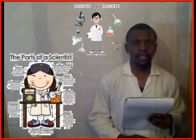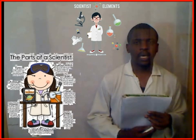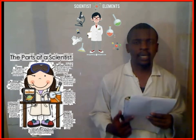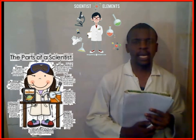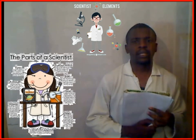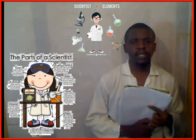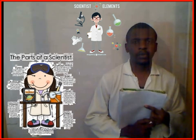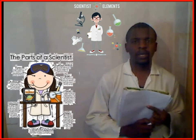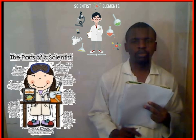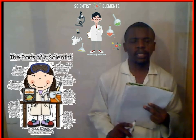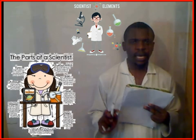A scientist is an expert in science. Someone who studies science is called a science student. We shall now look at some famous scientists, the era in which they lived, and the contributions they made in science.